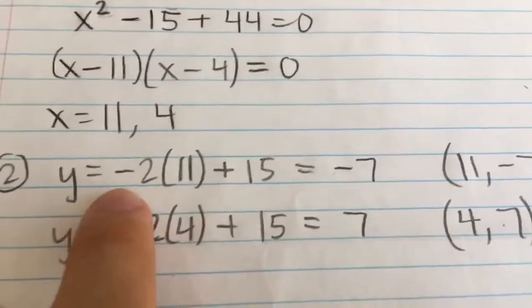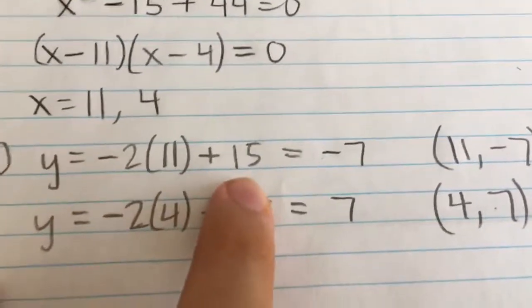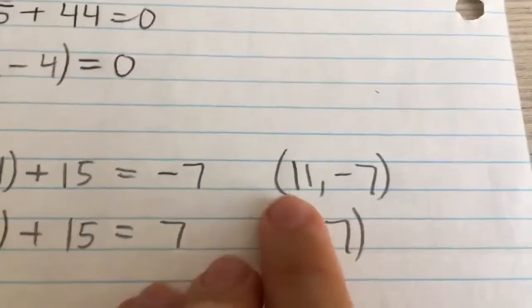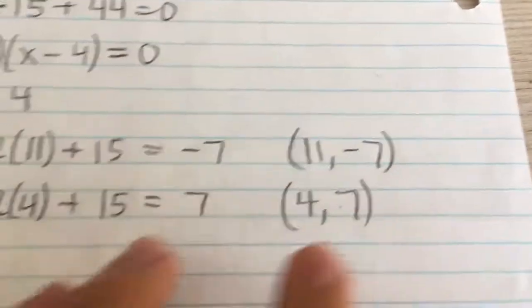Negative 2x plus 15. So negative 2 times 11 plus 15, that gives me negative 7. So that means x equals 11, y equals negative 7 is one of the solutions.